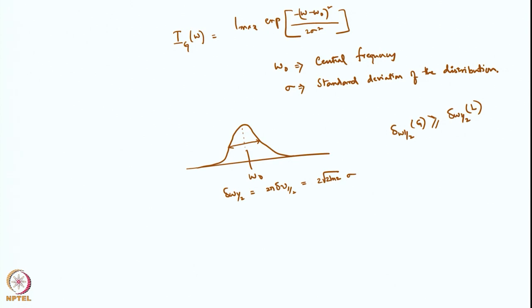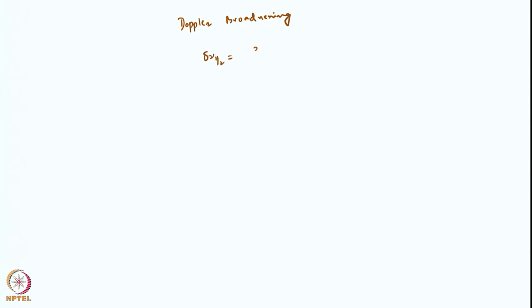Sometimes in the gas phase you have Doppler broadening, because atoms and molecules are moving around. The Doppler broadening gives: delta-nu-half equals 2 nu times the square root of (2 k_B T ln 2) divided by m c-squared. This depends on the temperature, the mass, and the speed of light. Temperature affects molecular speeds, so Doppler broadening is temperature-dependent.